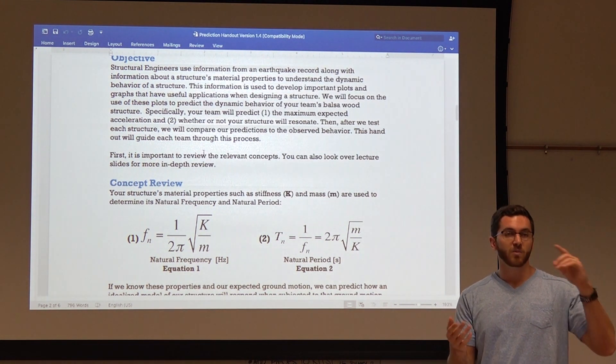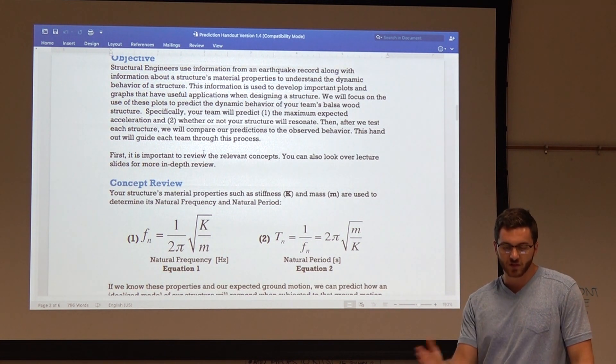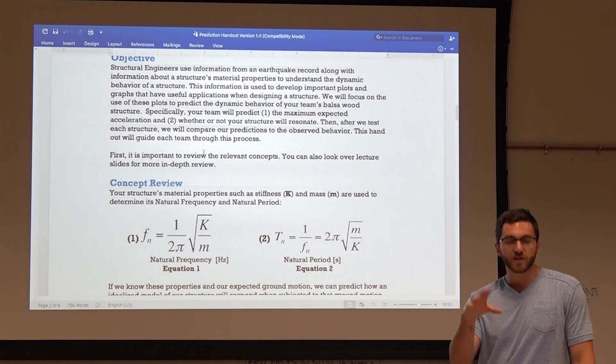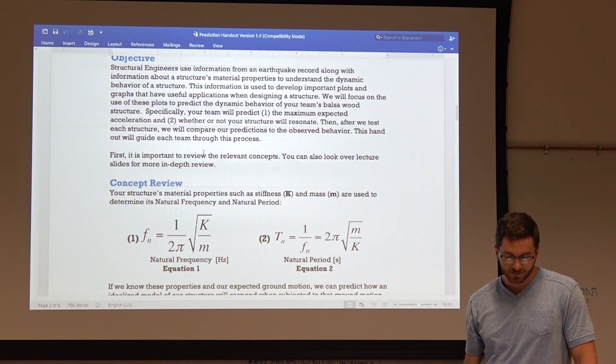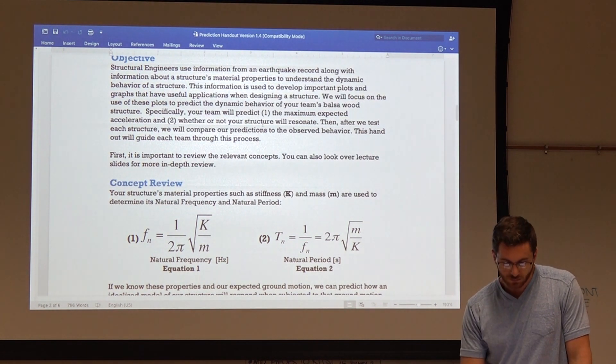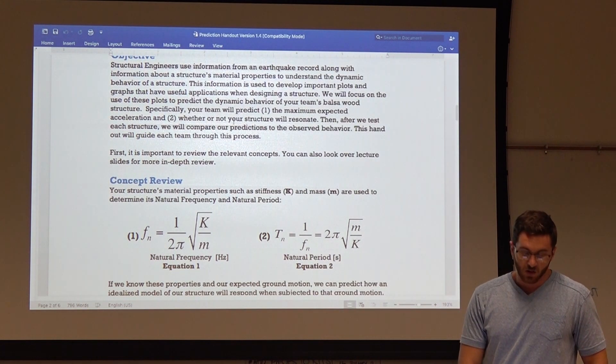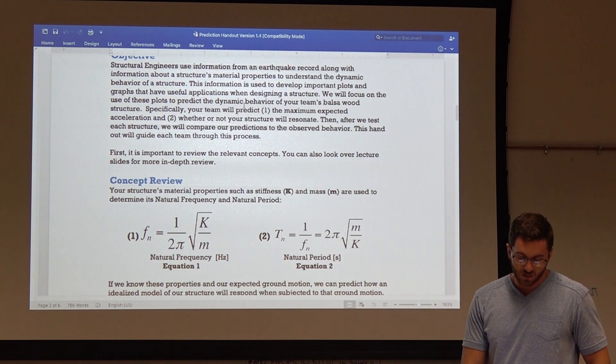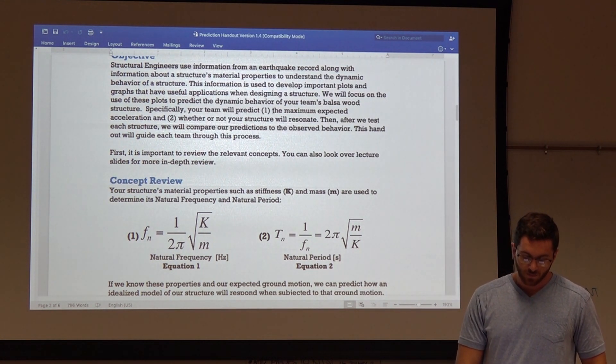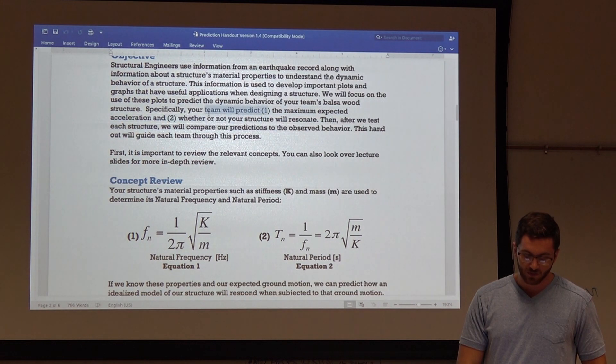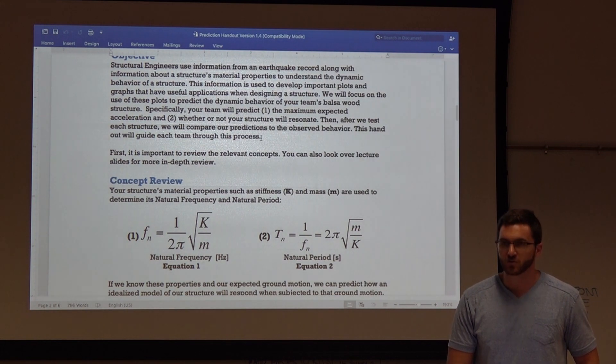So we'll pass it out and then we give the students a chance to read it. And once they read the objective and kind of scan through the rest, we'll go over it together. So I'll start off there. So you guys have read the objective of this worksheet or of this handout. And specifically, we're going to use this handout for two things. Number one, to predict the maximum expected acceleration. And number two, to predict whether or not your structure will resonate.